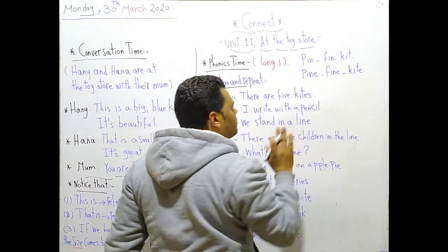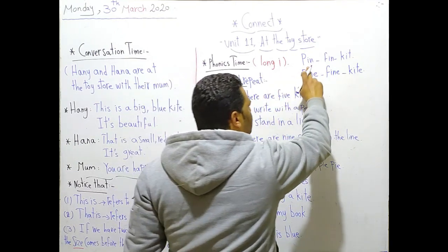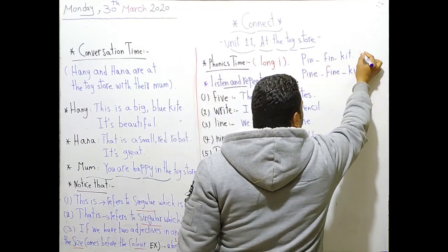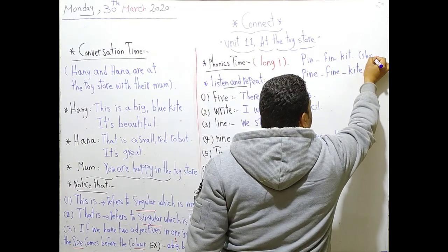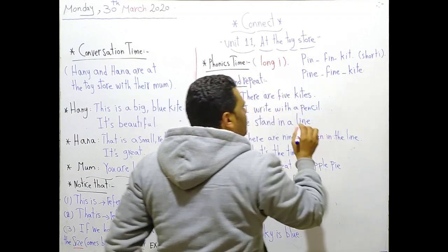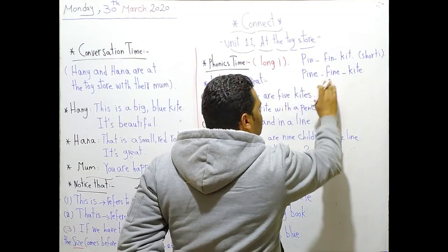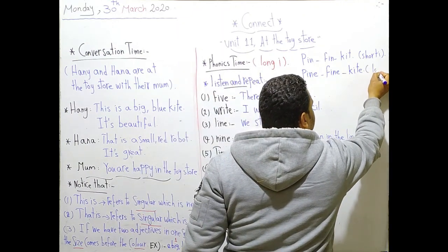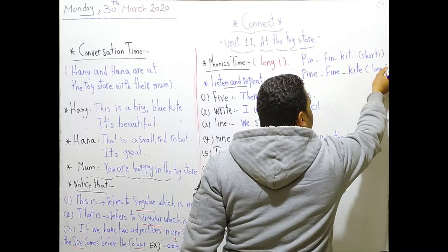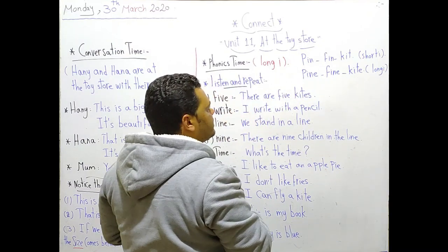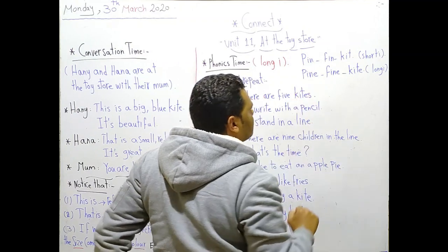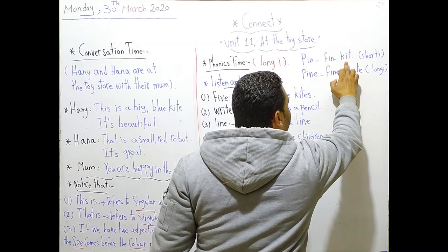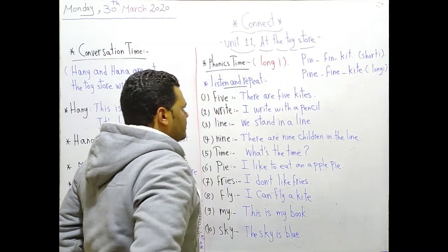Now these words are different. These words contain short I. These words contain long I. Look at the difference. We say pin and pine, fin and fine, cat and kite.